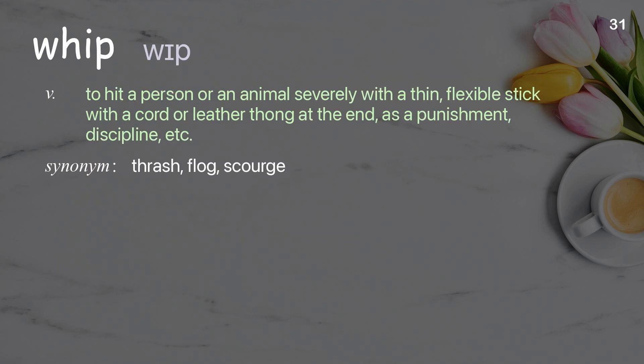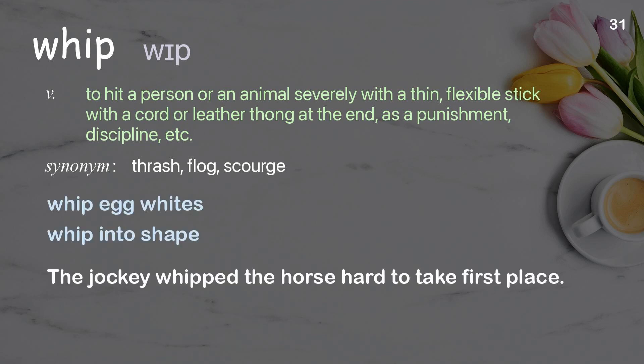Whip: to hit a person or an animal severely with a thin, flexible stick with a cord or leather thong at the end, as a punishment or discipline. Examples: whip egg whites, whip into shape. The jockey whipped the horse hard to take first place.